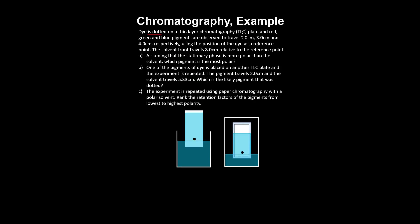In a worked example, dye is dotted on a thin layer chromatography plate and three pigments are observed to travel the following distances with respect to the position of the dye. The solvent front travels 8 centimeters. Assuming the stationary phase is more polar than the solvent, the most polar pigment is the red pigment because it travels the least distance, as it's most attracted to the stationary phase. One of the pigments is placed on another TLC plate, the experiment is repeated, and the pigment travels 2 centimeters while the solvent travels 5.33 centimeters.